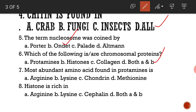The most abundant amino acid found in protamines is arginine. Histone is rich in both arginine and lysine — both A and B. This is the key difference between protamines and histones: protamines are rich in arginine, whereas histones have both arginine and lysine in greater concentration.